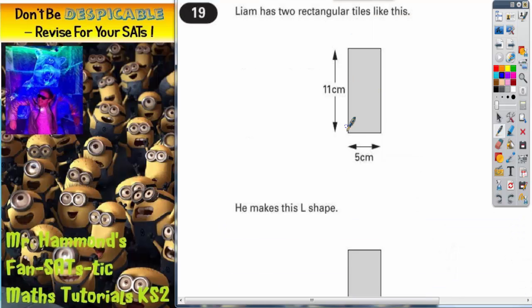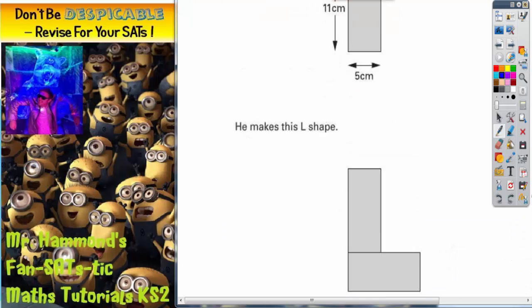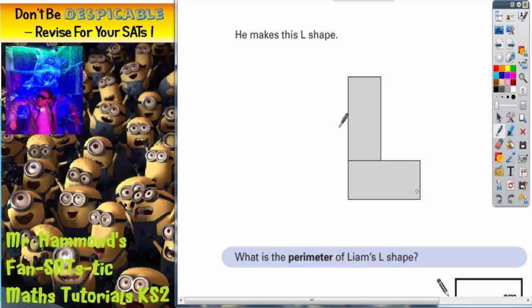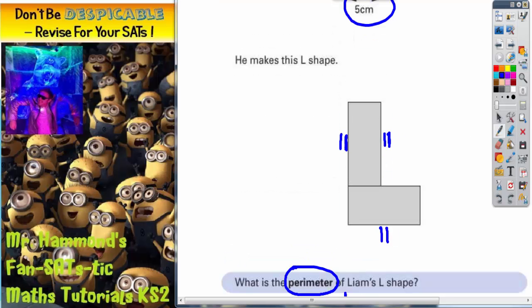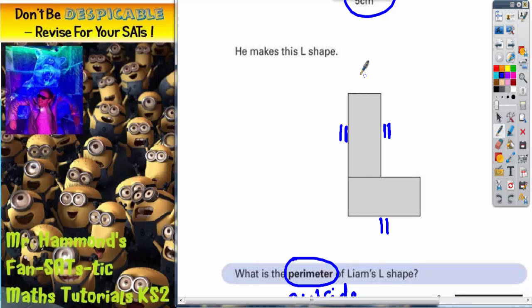Well remember the long side is 11 and the short side is 5. So what we need to do now is start writing on the long side is 11. So this side is 11, this side is 11 and this side is 11. We're only interested on the outside of the shape because perimeter is around the outside distance. So we've got 11, 11 and 11 along the bottom and the shorter sides are 5s as you can see there. So we need to write 5s on the shorter distances. So this is a 5, this is a 5 and this is a 5.